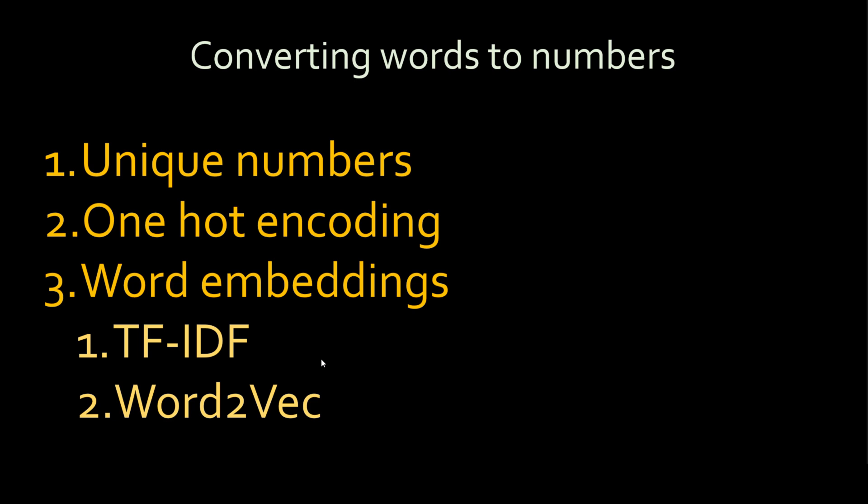To summarize, we looked at three methods of converting words into numbers: unique numbers, one-hot encoding, and word embeddings. In word embeddings there are a variety of techniques available such as TF-IDF and Word2Vec, which we will cover in future videos. I hope you liked this tutorial — if you have any questions, please post them in the comments below. Thank you.